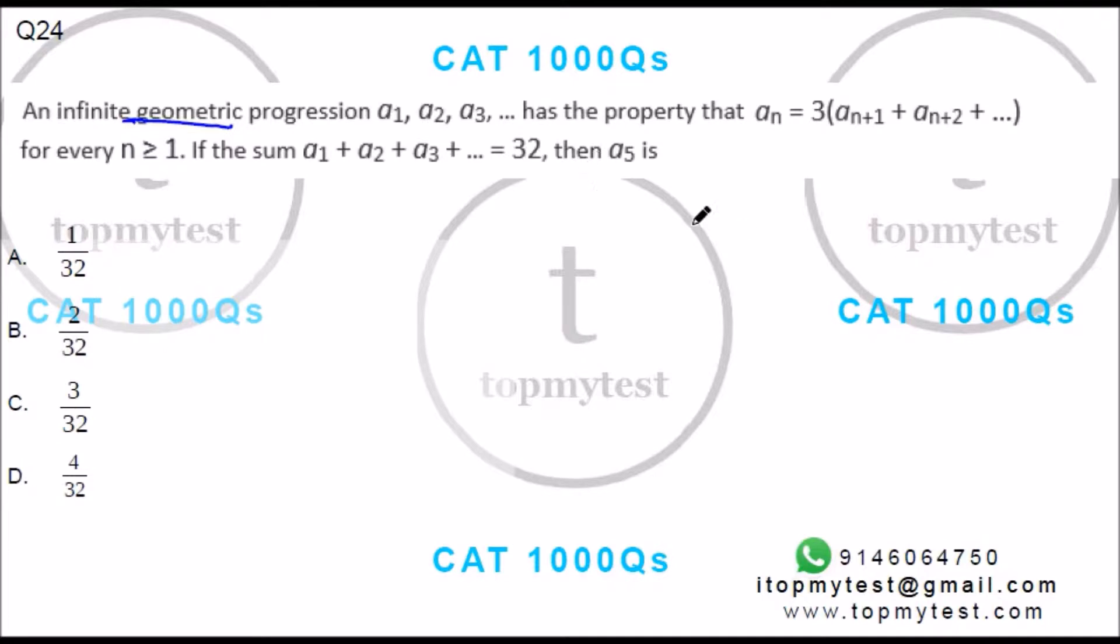This is a decreasing geometric progression. It's an infinite geometric progression where the first term is three times the sum of the rest of the terms.